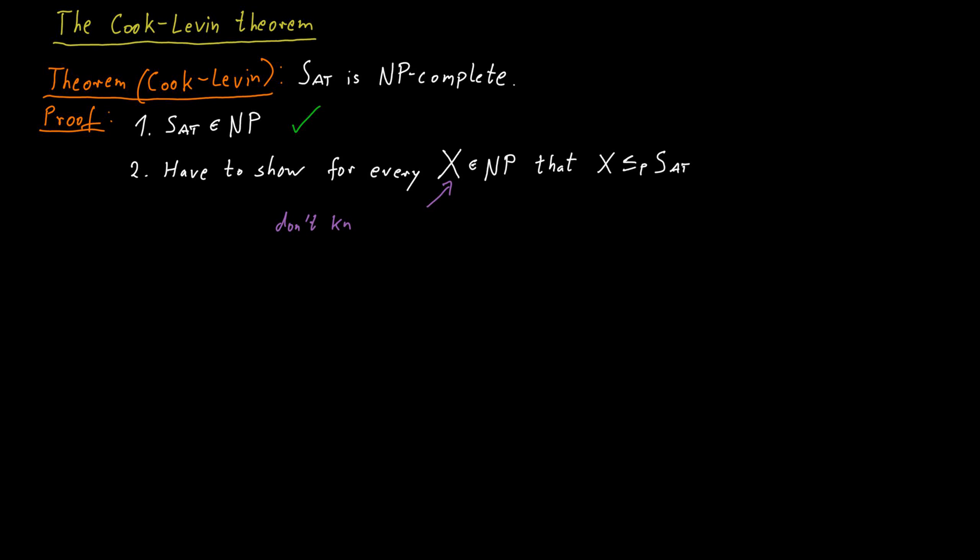The difficulty here is that we do not know a lot about the problems we have to reduce from. The only fact we know is that they are in NP. Because we do not know anything further than that about these problems, the only thing we can use in our proof is the definition of NP itself. We know that a problem is contained in NP if we have a polynomial time certifier for that problem. So when we want to reduce a problem X to satisfiability in polynomial time, we look at the certifier for that problem X. That's a Turing machine.